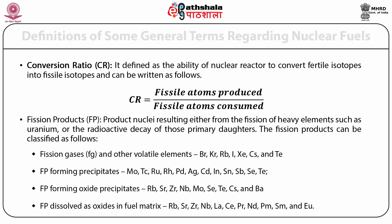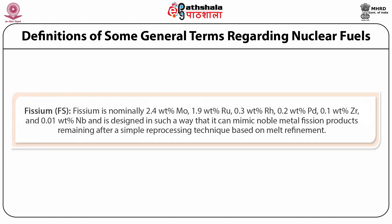Last is physium (FS). It is nominally 2.4 weight percent molybdenum, 1.9 weight percent ruthenium, 0.3 weight percent rhodium, 0.2 weight percent palladium, 0.1 weight percent zirconium, and 0.01 weight percent niobium. It is designed to mimic noble metal fission products remaining after a simple reprocessing technique based on melt refinement.